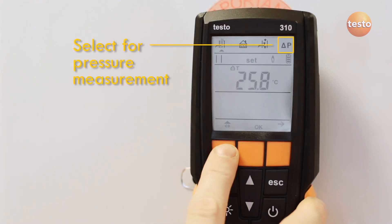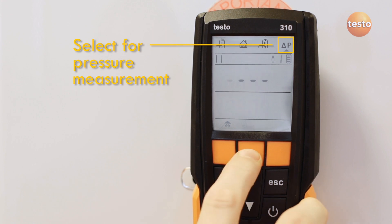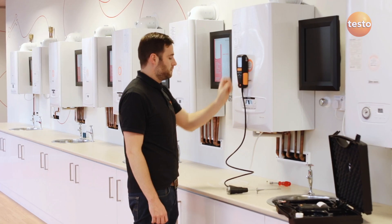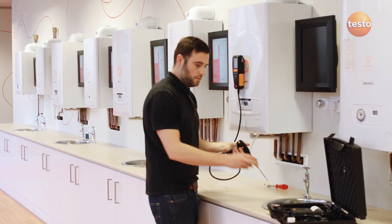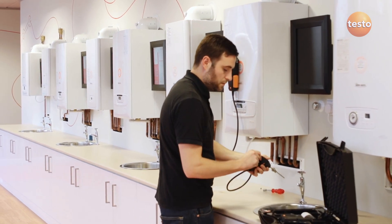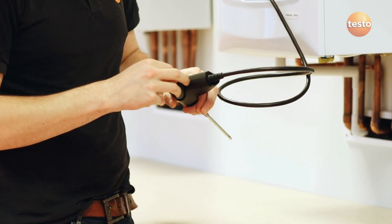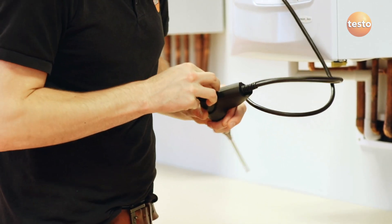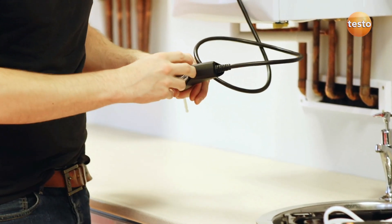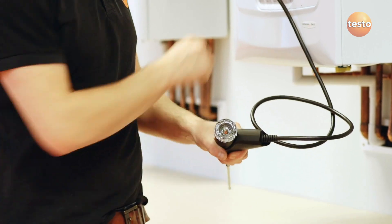To measure gas pressure, select the pressure test mode, which causes the 310 to remind you to fit the pressure plug in the probe. This seals off the gas path to allow pressure to be measured. Remove the filter and put the orange plug into the hole in the center of the probe handle.